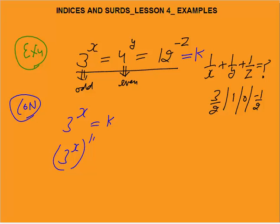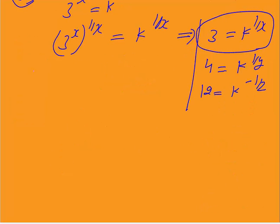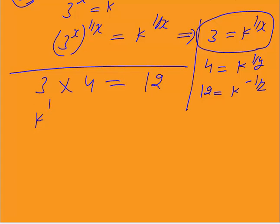Set 3^x = 4^y = 12^(-z) = k. From 3^x = k, raise both sides to power 1/x: 3 = k^(1/x). Similarly, 4 = k^(1/y). And from 12^(-z) = k, solving similarly gives 12 = k^(-1/z). By common sense, 3 × 4 = 12, so k^(1/x) × k^(1/y) = k^(-1/z).